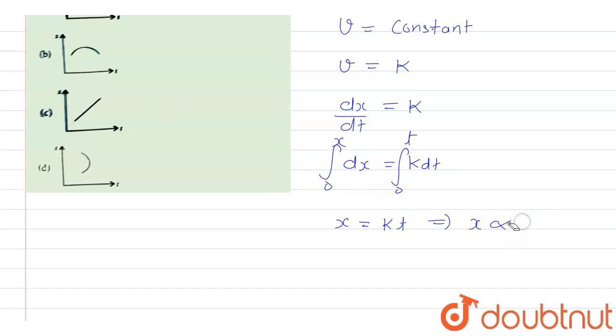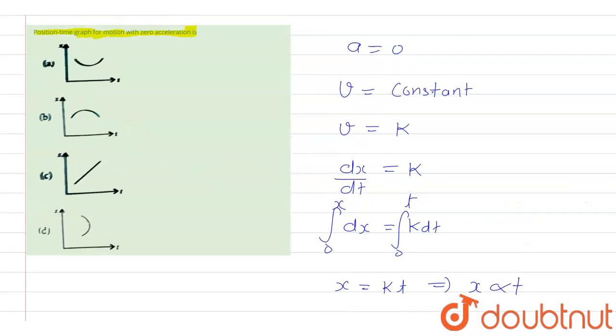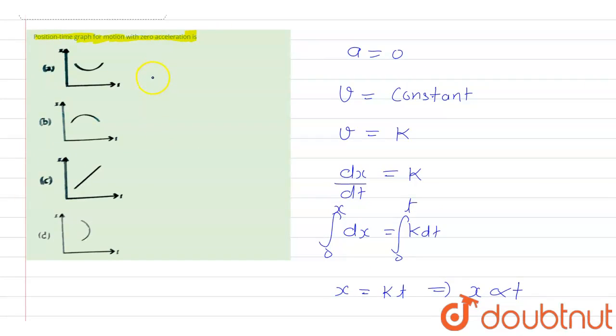With this we can say that the graph of x versus t will be a linear graph. Right, x versus t will be a linear graph.